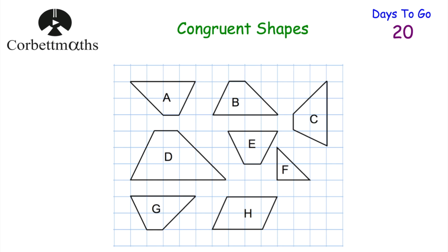This time we've got a grid of shapes: several trapeziums, a right-angled triangle (F), and a parallelogram (H). We need to find which shapes are congruent to each other. F is the only right-angled triangle and H is the only parallelogram, so we can eliminate them. That leaves trapeziums A, B, C, D, E, and G. D is much larger than the others, so it has no congruent match. E has a line of symmetry, which the others don't, so it's not congruent to any of the others either.